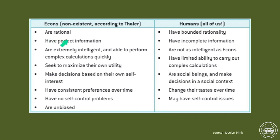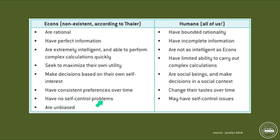What do behavioral economists say about econs — these neoclassical homo economicus beings that they argue don't even exist? Econs are rational, they have perfect information always, they are extremely intelligent and able to perform complex calculations very quickly, they seek to maximize only their own utility, they make decisions based on their own self-interest, they have consistent preferences over time, have no self-control problems, and are unbiased.